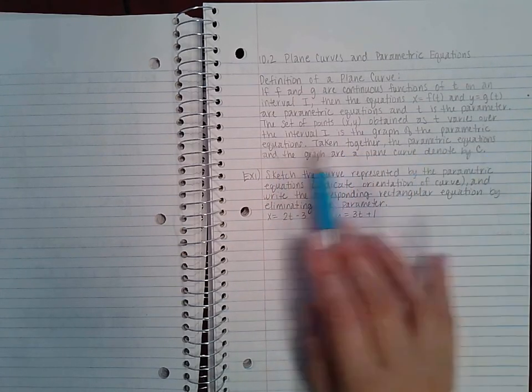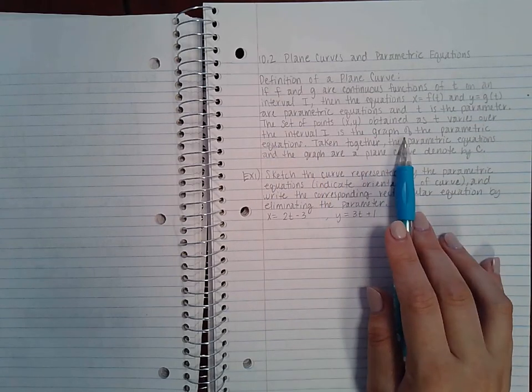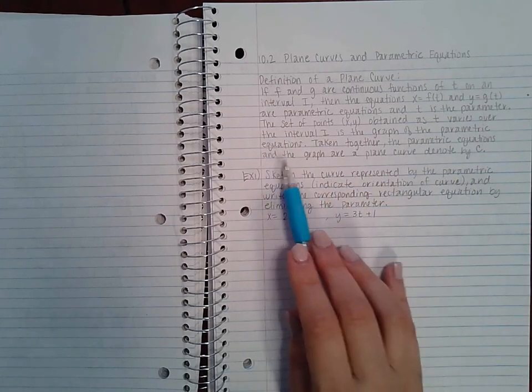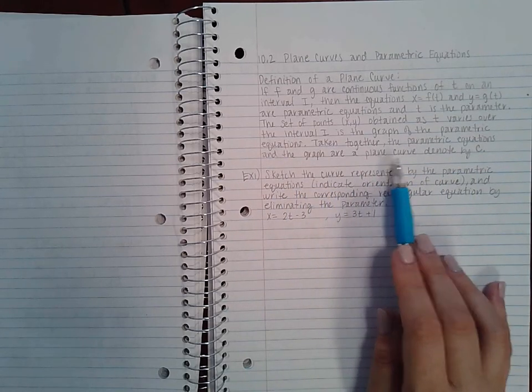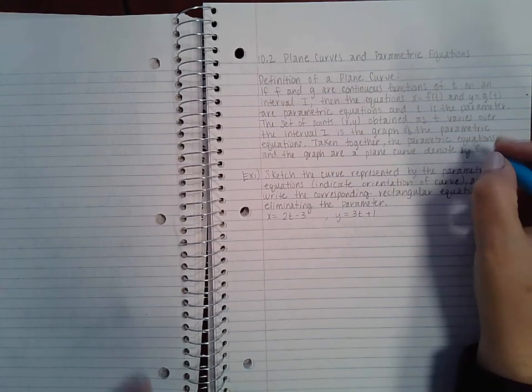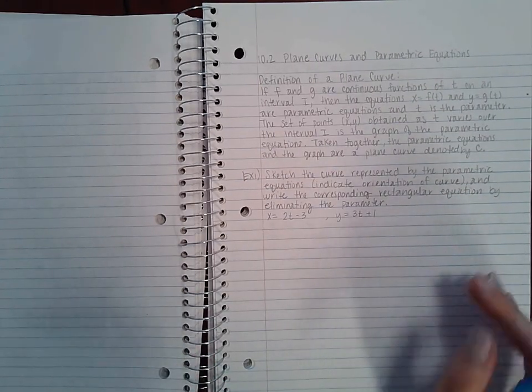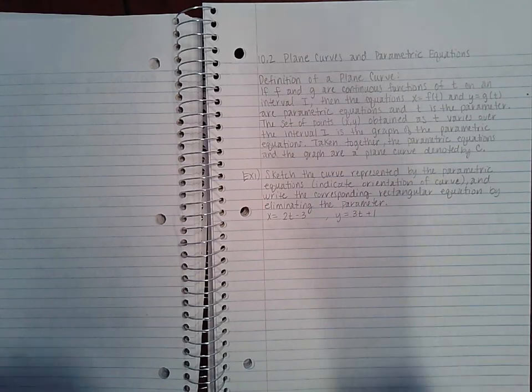as t varies over the interval is the graph of the parametric equations. Taken together, the parametric equations and the graph are a plane curve denoted by C. Essentially, they usually use t for time, so what happens